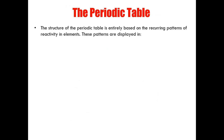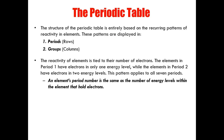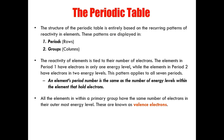The structure of the periodic table is entirely based on the recurring patterns of reactivity in elements. These patterns are displayed in periods, which are rows on the periodic table, and groups, which are columns. The reactivity of elements is tied to their number of electrons. The elements in period one have electrons in only one energy level, while the elements in period two have electrons in two energy levels. This pattern applies to all seven periods, and so an element's period number is the same as the number of energy levels within the element that hold electrons. All the elements within a primary group have the same number of electrons in their outermost energy level. These are known as valence electrons.